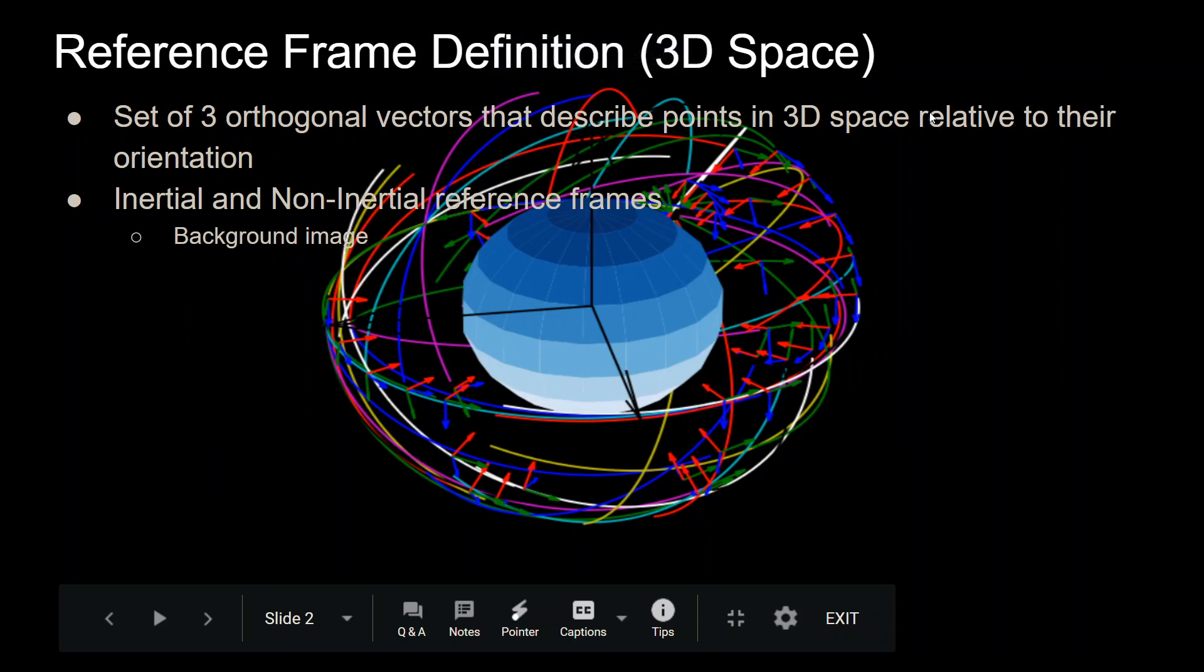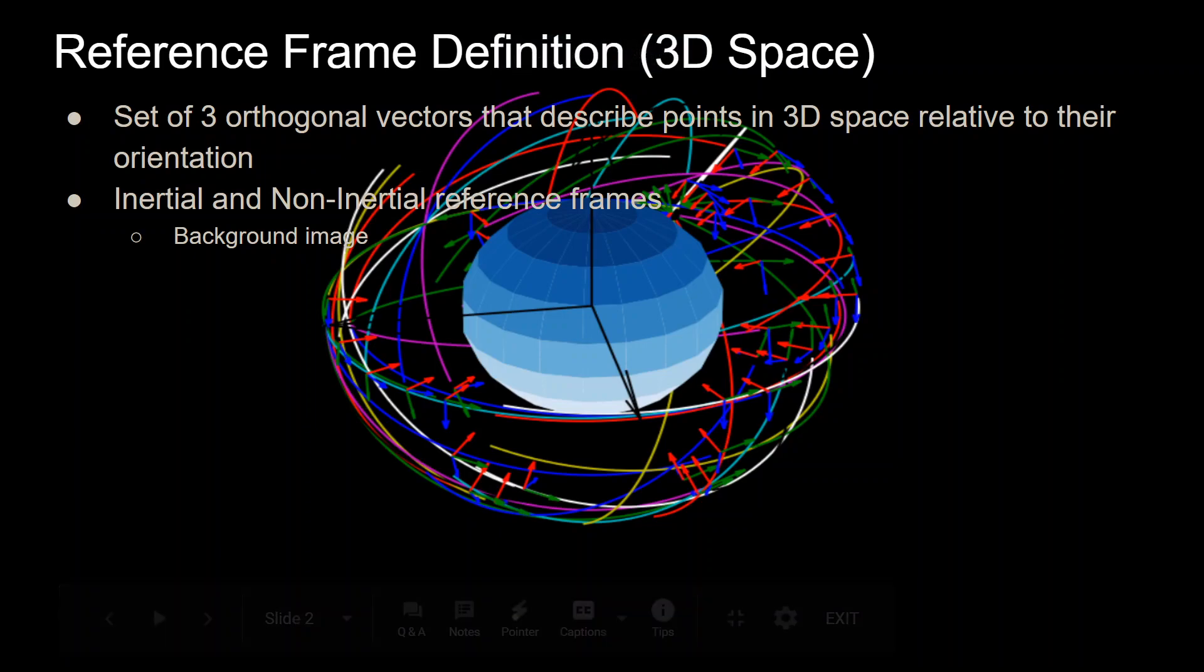This is the third video in this video series and in this one I'm going to be going over reference frames. We start with a reference frame definition which is not a very formal definition but it's the way that I like to think about it for 3D space reference frames, which is a set of three orthogonal vectors that describe points in 3D space relative to their orientation.